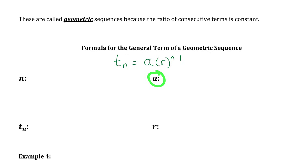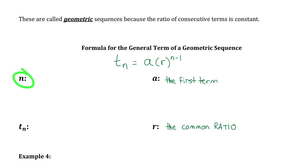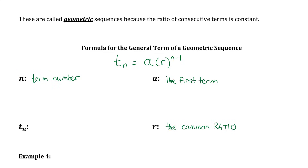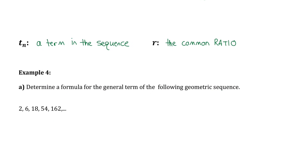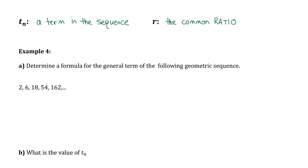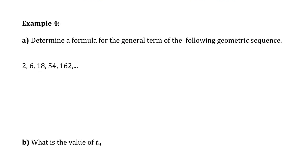Let's define each parameter. A is the first term in the sequence. r is the constant common ratio. n is the term number. And Tn is the actual value of the term in the sequence. Now let's do a couple examples with geometric sequences.